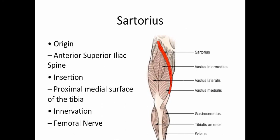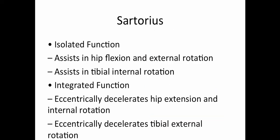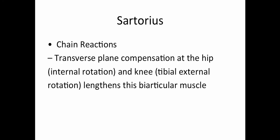The sartorius originates on the anterior superior iliac spine and inserts on the proximal medial surface of the tibia. Its isolated function is to assist in hip flexion and external rotation and also assists in tibial internal rotation. The integrated function is that it eccentrically decelerates hip extension and internal rotation and eccentrically decelerates tibial external rotation. Any transverse plane compensation at the hip, including internal rotation and tibial external rotation, will lengthen the sartorius muscle.